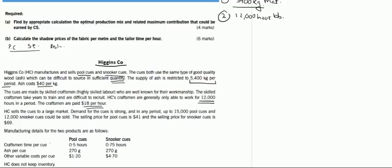HCCC sells the cues to a large market. Demand for the cues is strong, and in any period up to 15,000 pool cues and 12,000 snooker cues could be sold. One more thing to note is that at maximum you can sell 15,000 pool cues. The market has 15,000 capacity; you cannot sell more than 15,000 pool cues. Likewise, you cannot sell more than 12,000 snooker cues.